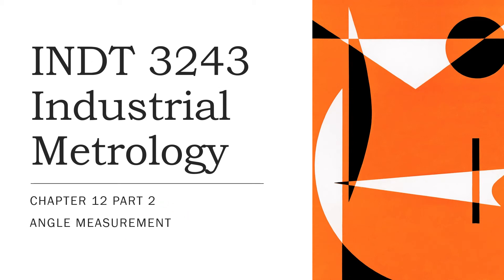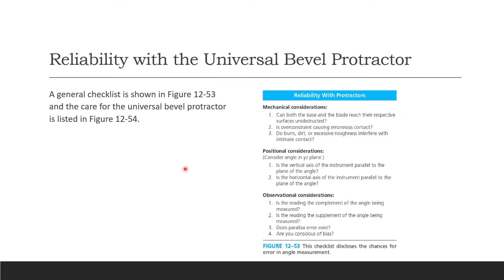We are going to continue Chapter 12, Part 2 for Angle Measurement: Reliability with a Universal Bevel Protractor. Here is a general checklist in this table about how to care for your protractor. You will think about mechanical conditions, positional, and observational considerations. Being careful about mechanical, positional, and observational aspects is important to maintain reliability with your instrument.